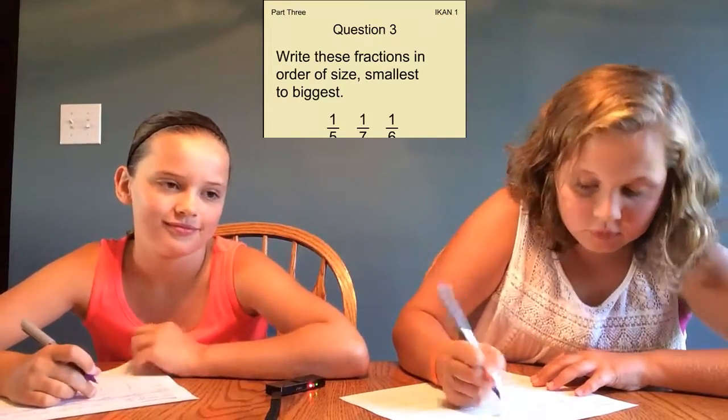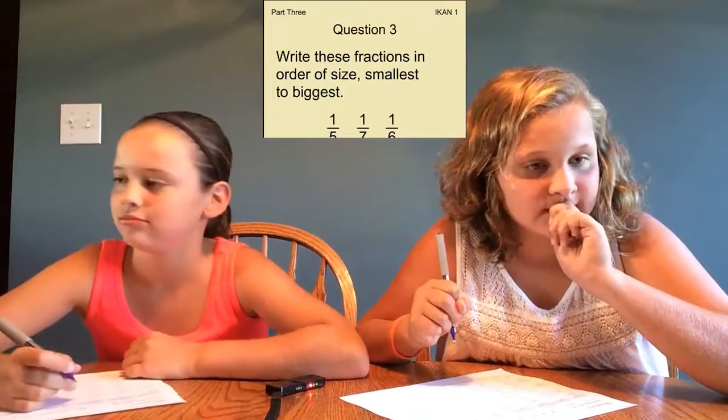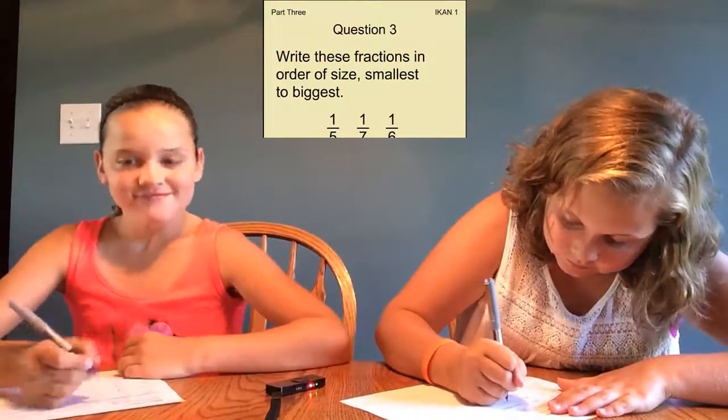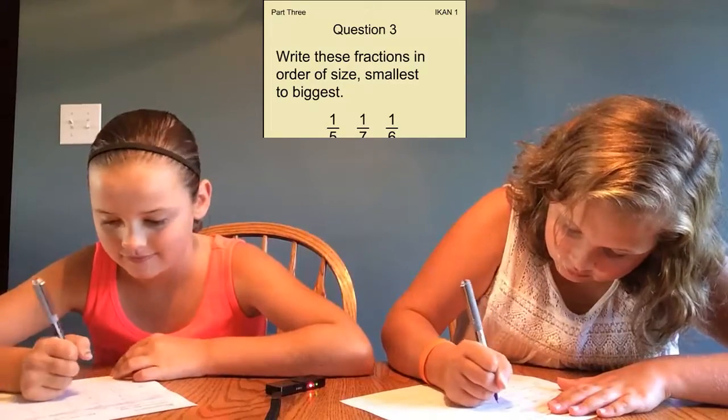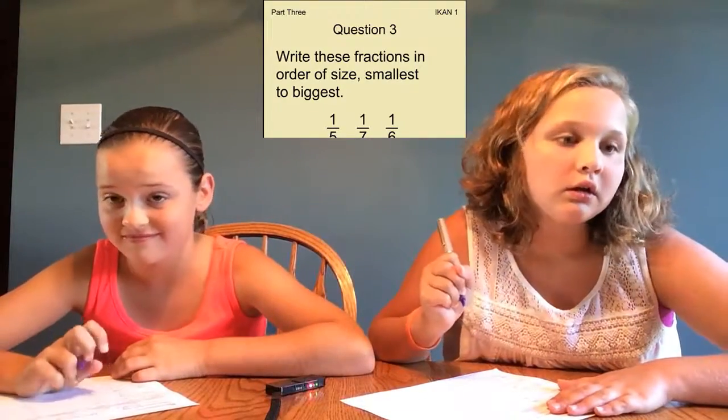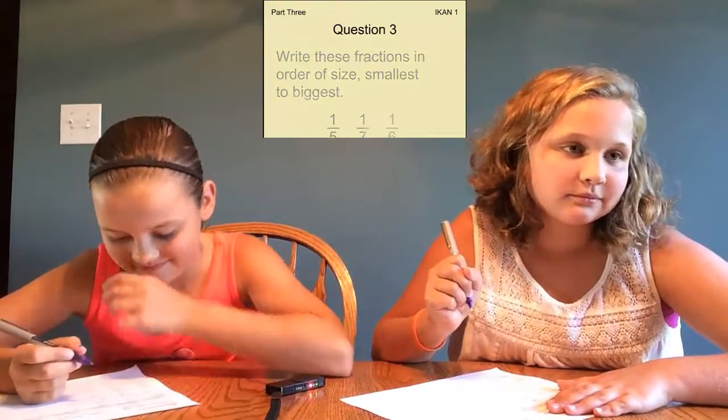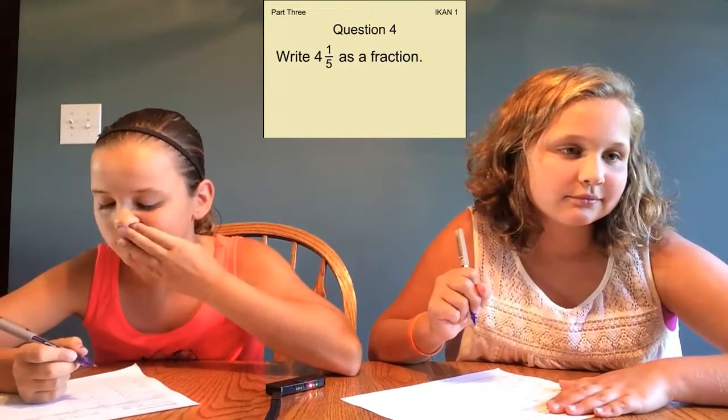Write these fractions in order of size, smallest to biggest: 1 5th, 1 7th, 1 6th. Write 4 and 1 5th as a fraction.